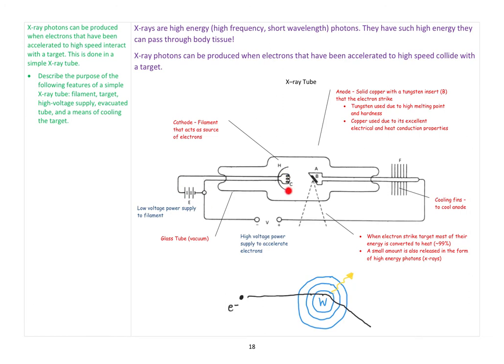Between that filament and this part here, which is called the anode or I prefer the target, we apply a very high voltage. That causes electrons at the surface to be accelerated at high speed towards the target.